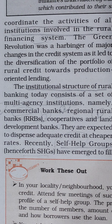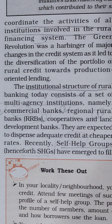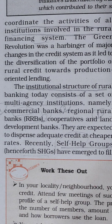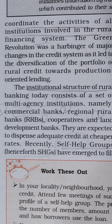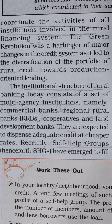The Green Revolution was a harbinger of major changes in the credit system as it led to the diversification of the portfolio of rural credit towards production-oriented lending. The institutional structure of rural banking today consists of a set of multi-agency institutions, namely commercial banks, regional rural banks (RRBs), cooperatives and land development banks.